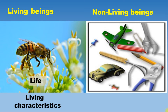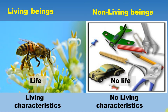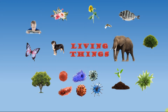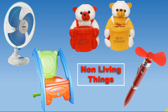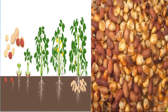Non-living beings do not have life, so they cannot show living characteristics. Human beings, plants, animals, and insects are all living beings because they have life. Now look at this picture — chair, fan, pen, and toys: all these things do not have life, so these are non-living things.